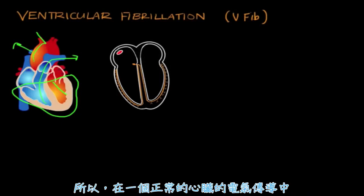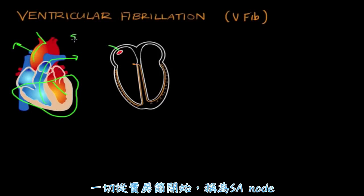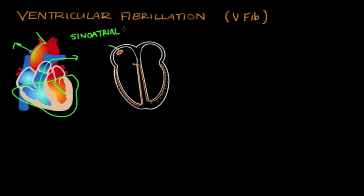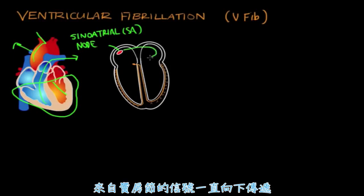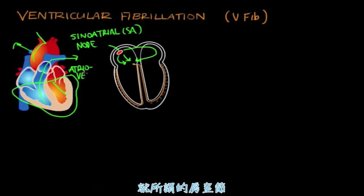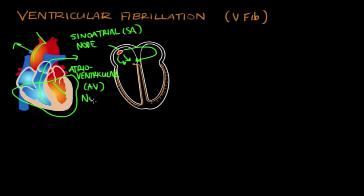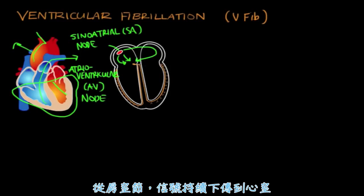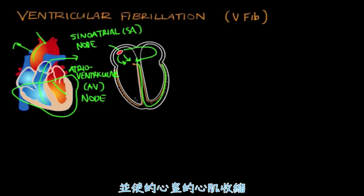In a normal heart, the electrical conduction starts at the sinoatrial node, also known as the SA node. The signal travels from the SA node down to another structure called the atrioventricular, or AV node. From the AV node, the signal goes down to the ventricles, signals the ventricular cells, and makes the ventricular walls contract.